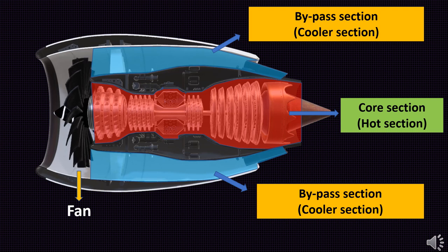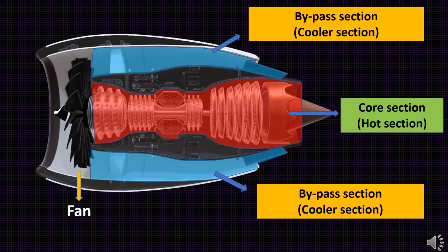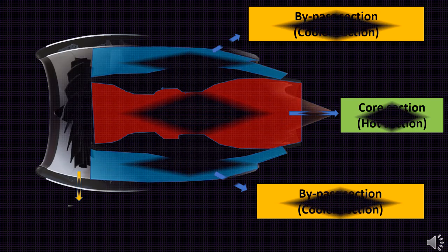The fan and the bypass are not present in the jet engine's design. The complete working of the core section and its components are explained in the How Aircraft Engine Works video given in the description.